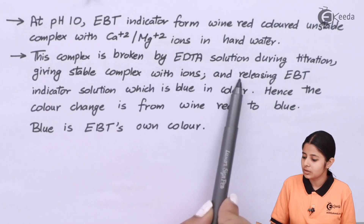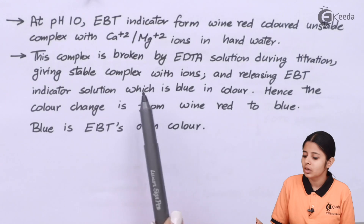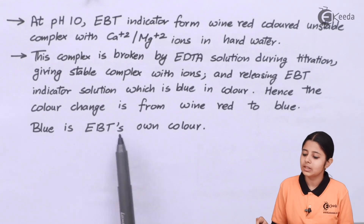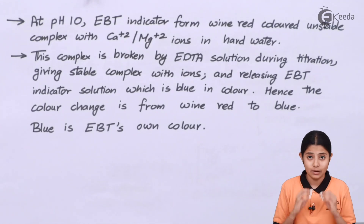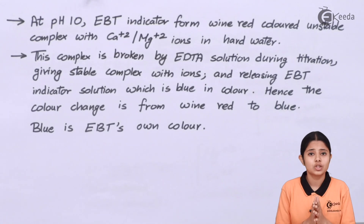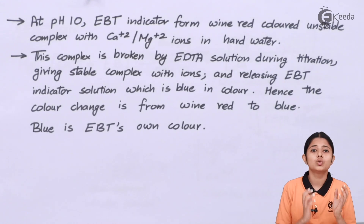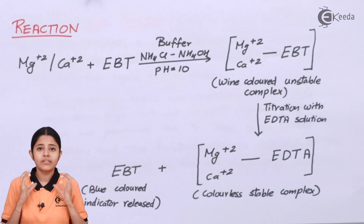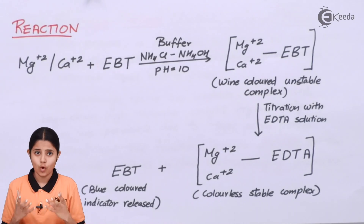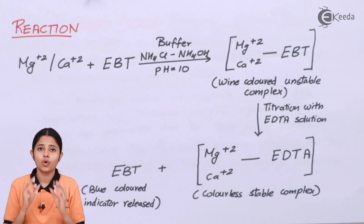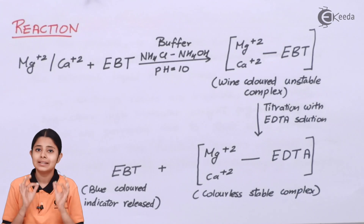This complex is broken by EDTA solution during titration, giving a stable complex with the metal ions and releasing the EBT indicator, which is blue in color. Hence the color change is from wine red to blue. Blue is EBT's own color. When EBT goes into hard water it reacts with calcium and magnesium turning wine red, but when titrated with EDTA it reverts to its original blue color.